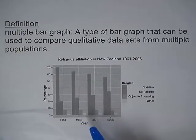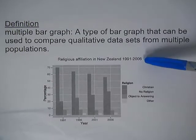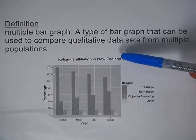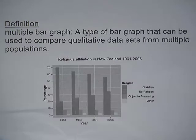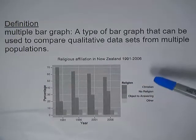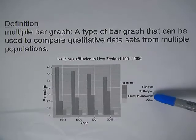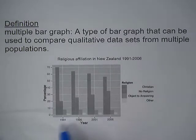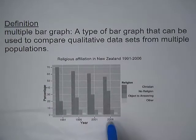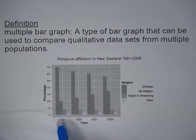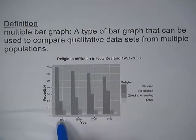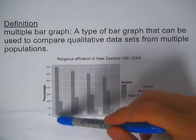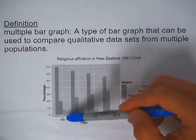Here's one that's already constructed, representing religious affiliation in New Zealand from 1991 to 2006. There are four possible religion responses: Christian, no religion, object to answering, and other. The years 1991, 1996, 2001, and 2006 represent the four different populations being compared.